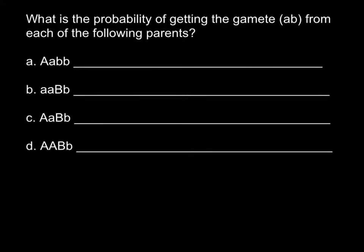Hi. Today I have a simple Mendelian genetics problem for you. Here is the question: what is the probability of getting the gamete from each of the following parents? I hope most of you would be able to easily solve this problem, so you may stop the video here and write down your correct answer. And for those of you who don't know how to solve this problem, here is my solution.